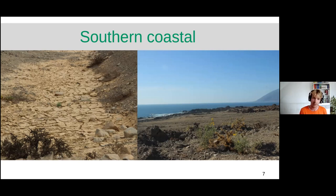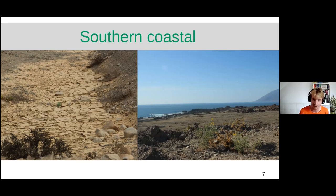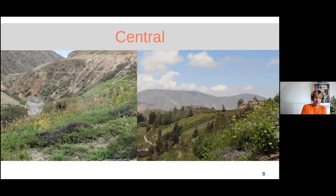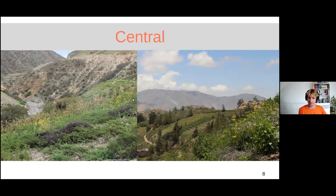That coastal humidity creates what we hypothesize is a very conducive environment for pathogens, since most pathogens need humidity to infect a plant. The central region is much greener and ranges from nearly sea level up to 3,500 meters — locals even grow potatoes on terraces there. This gives us a perfect model system to study both local adaptation and co-adaptation to pathogens.